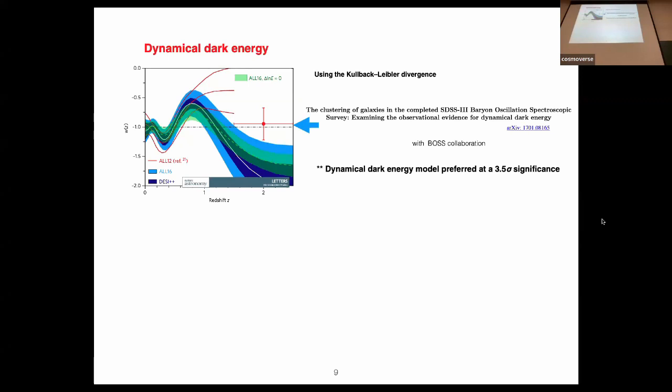However, a couple of years later with the DES collaboration, we had more information and techniques. We applied the polychord sampler with correlation functions and produced this plot. It has a preference of about three to three and a half sigma for dynamic dark energy. That is, the cosmological constant is in trouble. The second point is this equation of state is able to cross the phantom divide line.